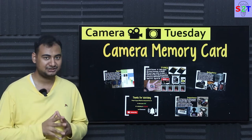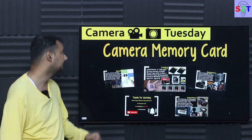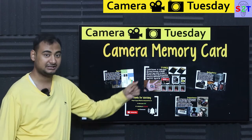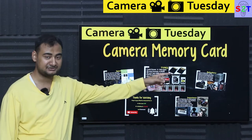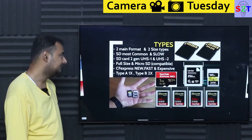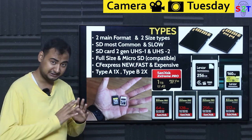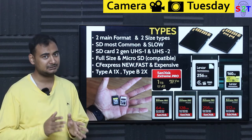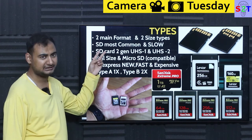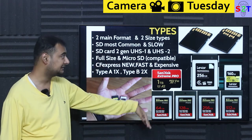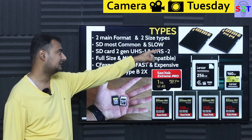Hello and welcome to my channel Science to Technology. In today's Camera Tuesday show we're going to talk about camera memory cards. There are two major types in modern cameras — the first format is CFast Express and the second is the old and well-known SD card format.